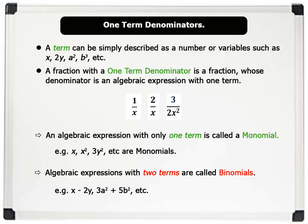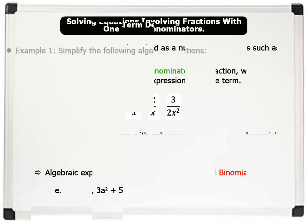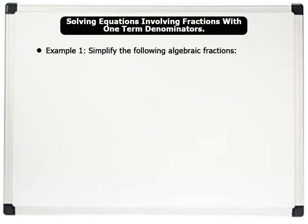Now, let us solve some problems involving algebraic expressions with only one-term denominators. Example 1: Simplify the following algebraic fractions. 1. 1 over x plus 2 over x. 2. 1 over x plus 1 over y.